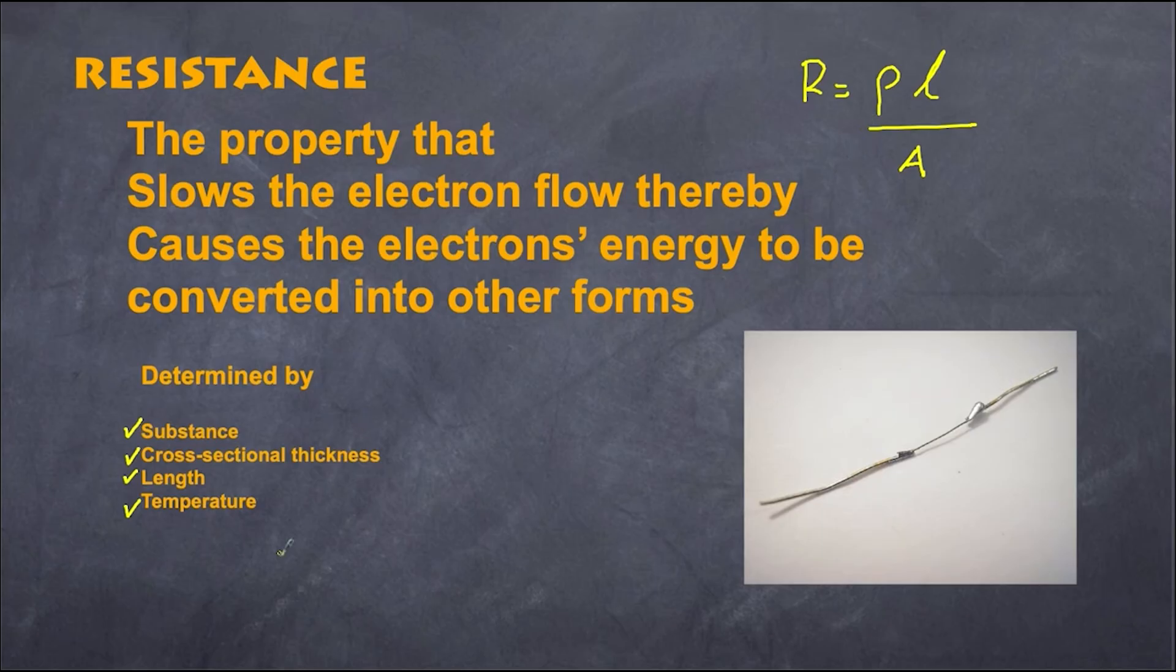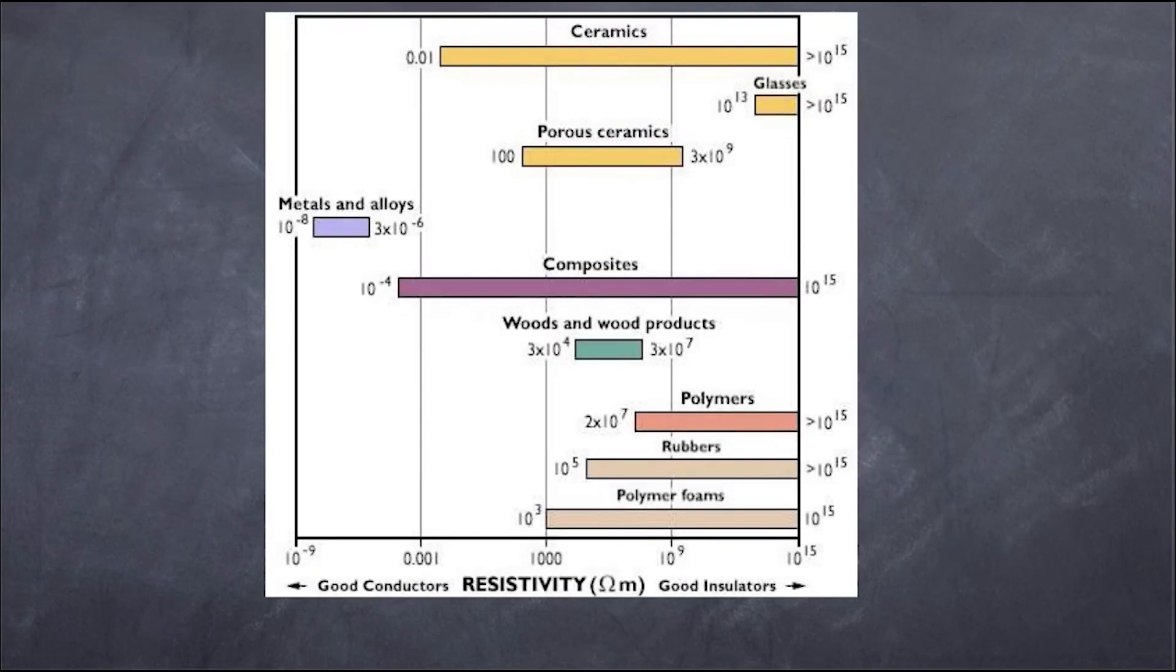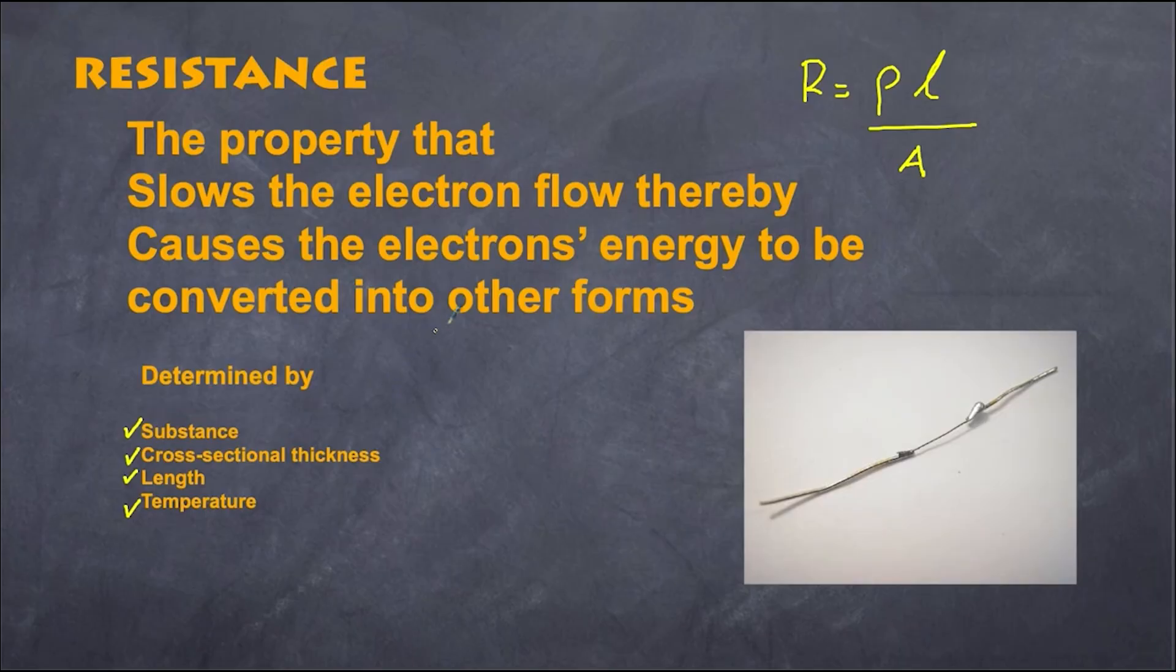Let's talk about resistivity first, which is related to this. What's the material made out of? That determines the actual value of the resistance. Obviously gold is better than iron, for example.